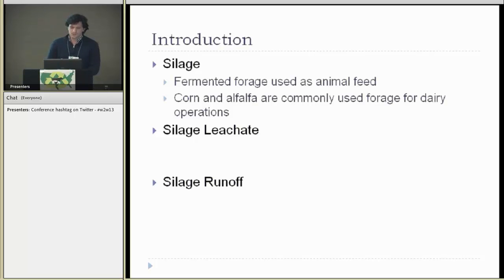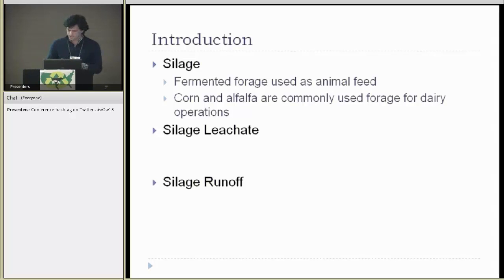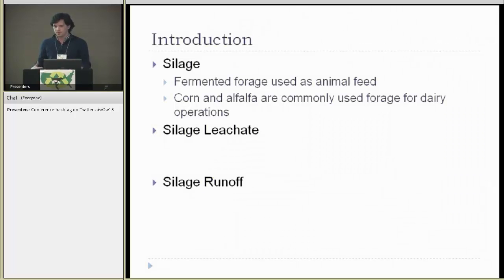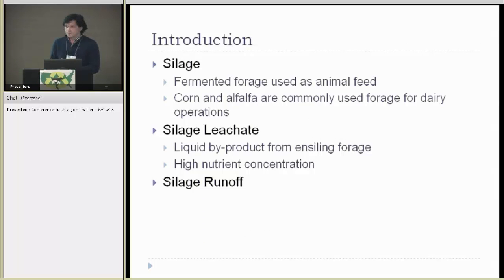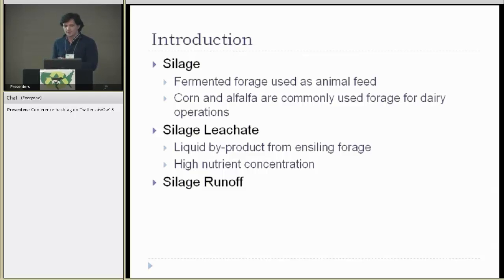What is silage? Silage is fermented forage used as animal feed. Corn and alfalfa are commonly used at dairy operations. Two pollutants produced from the ensilage process and from precipitation are silage leachate. This is the liquid byproduct from ensilaged forage. It's very high in nutrient concentration and the moisture comes from within the plant material and is a product of compaction and fermentation.